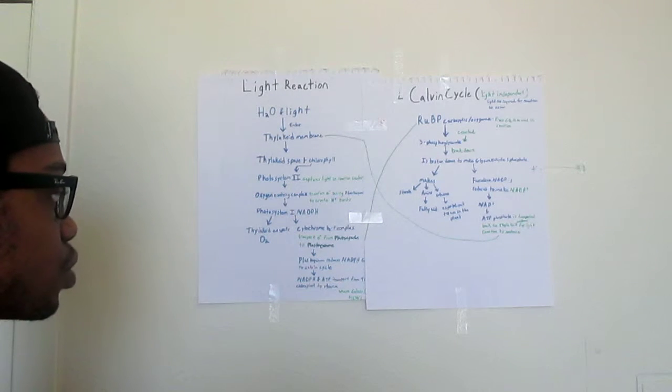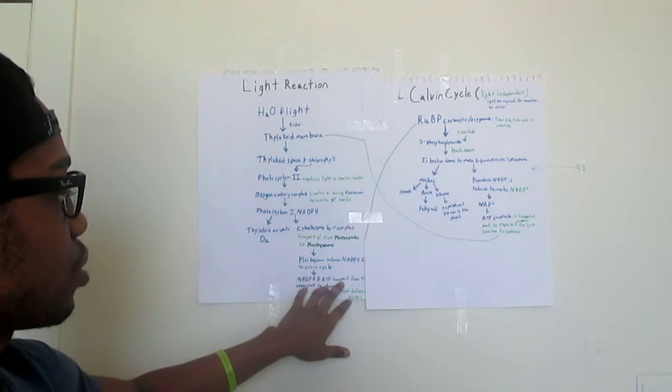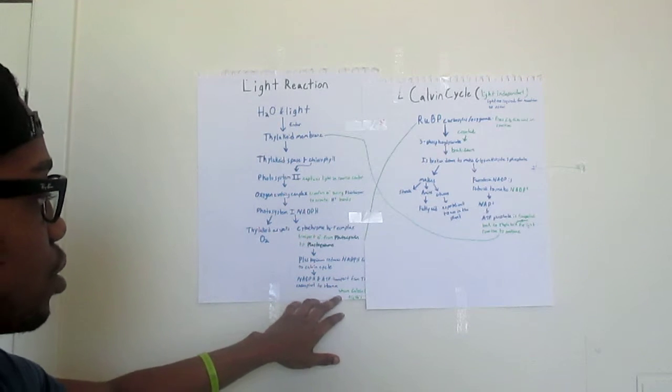The plastocyanin reduces NADPH for transport to the Calvin cycle, and the NADPH and ATP transfer from the thylakoid chlorophyll to the stroma where Calvin cycle occurs.